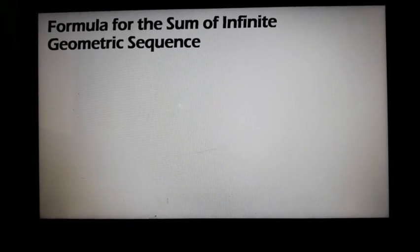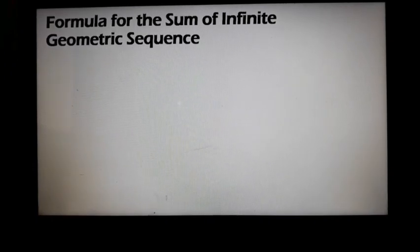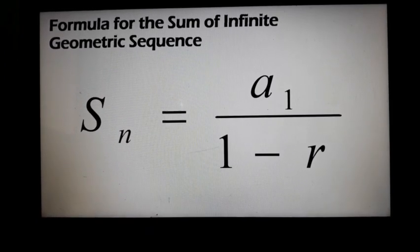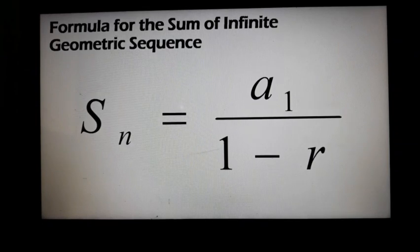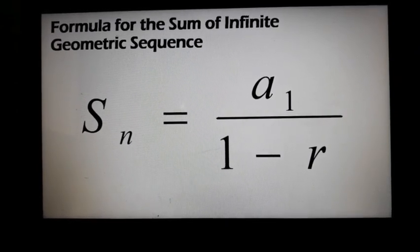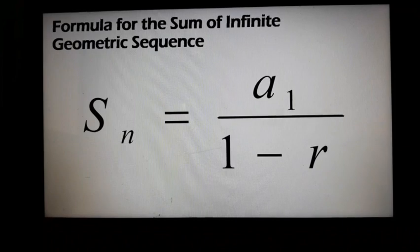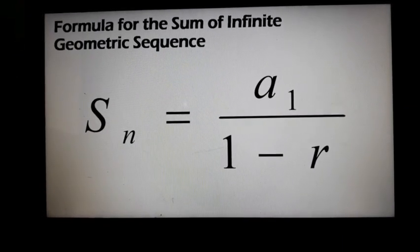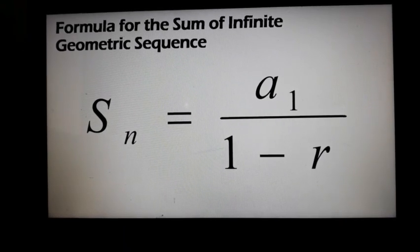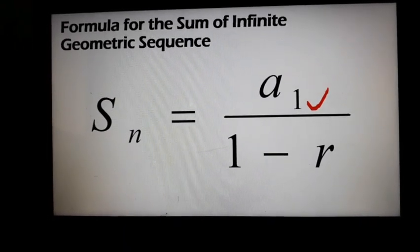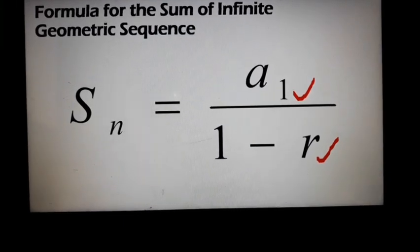What's the formula for the sum of an infinite geometric sequence? S sub n is equal to a sub 1 divided by 1 minus r. In this formula, you only need to know the first term — that's your a sub 1 — and r, which is the common ratio.